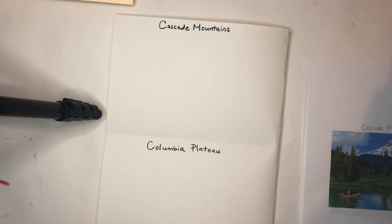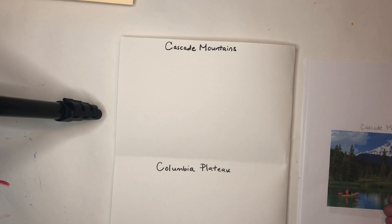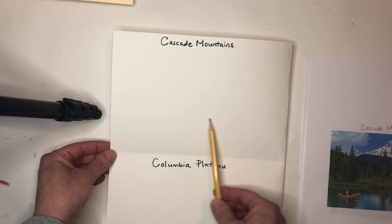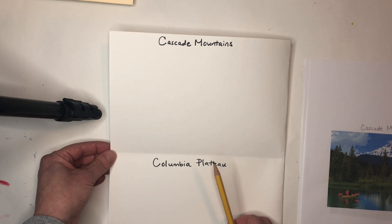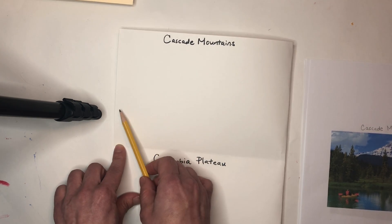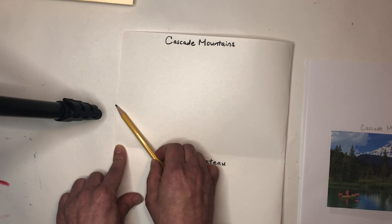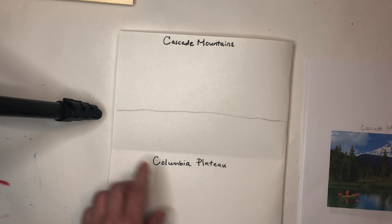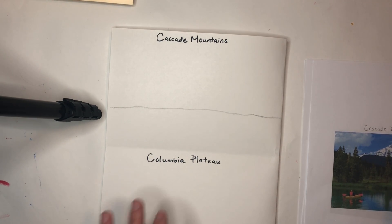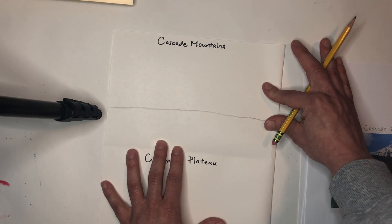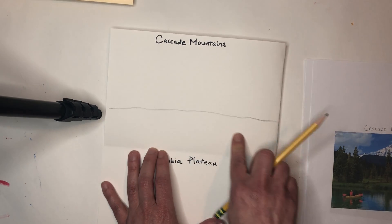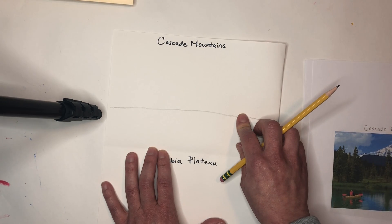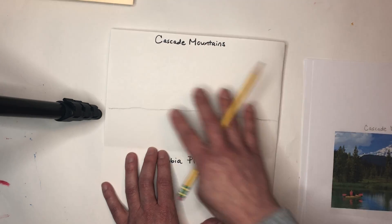When drawing a landscape, one important detail is a horizon line — that line separating your land from your sky, or your water from your sky. The first thing we'll do is draw a horizon line, a little bit below the middle of the page. Our foreground is below the horizon line, our middle ground is above it, and the background is behind our middle ground — usually the sky.